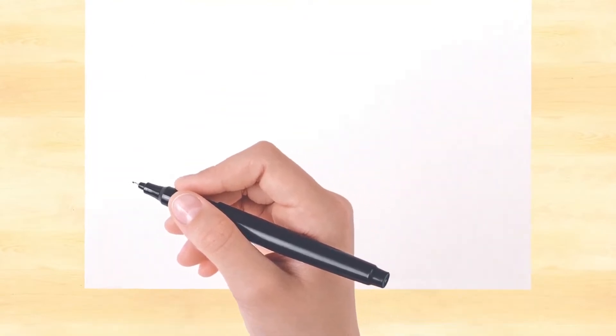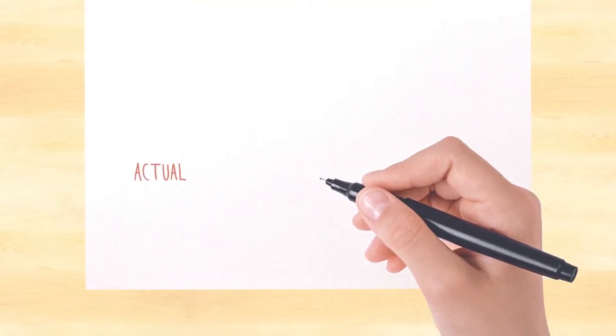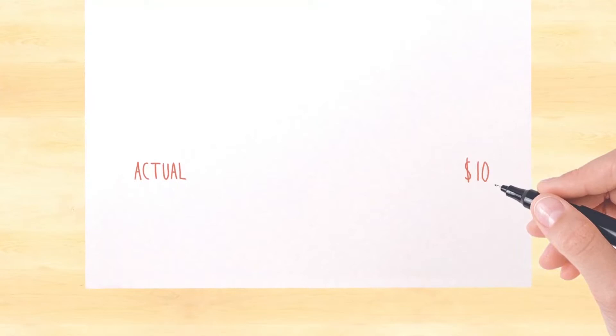Second, write down the number you actually got. It might be lower or higher than you planned. It's almost never exactly what you had expected.